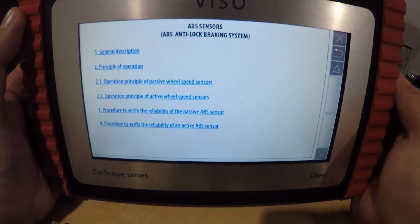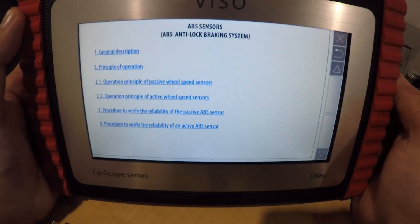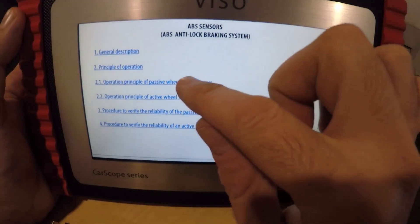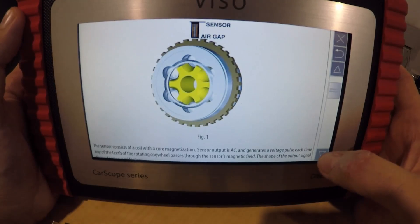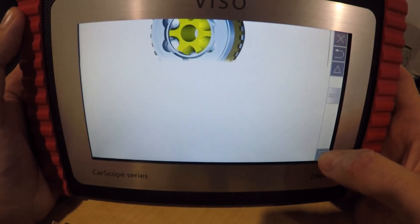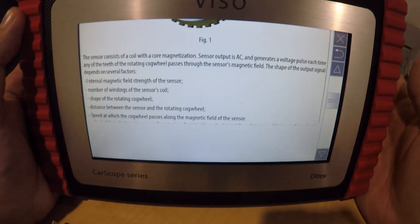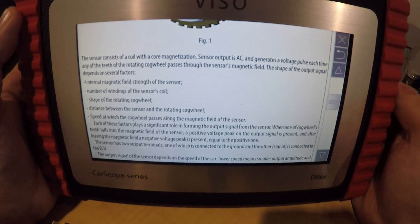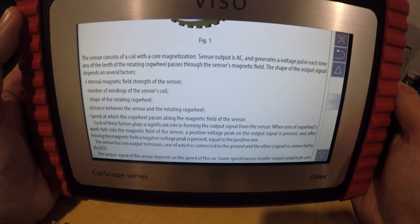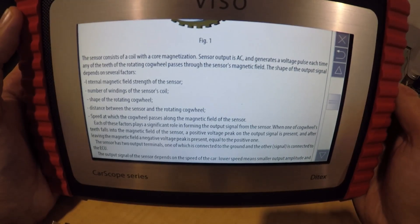It gives you a full list of principles of operations, procedures to verify reliability. You can go into those, it gives you a rundown. I mean that's pretty excellent to have in an actual scope when you're out on the road, particularly if you had someone semi-inexperienced who just wanted that extra top-up of knowledge of exactly what's going on. You probably wouldn't use ABS sensors as an example because obviously that's a really basic system that most people should know anyway.